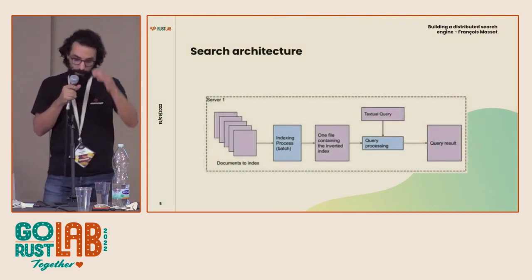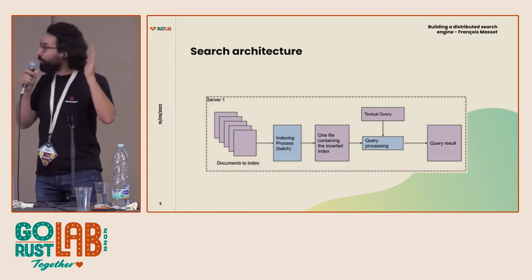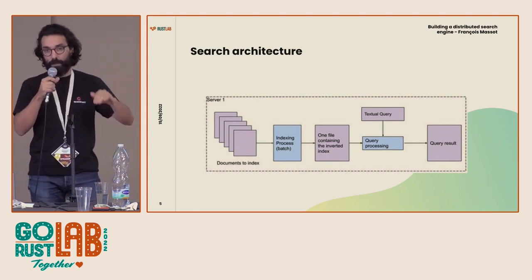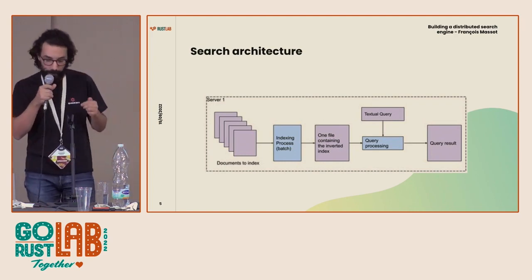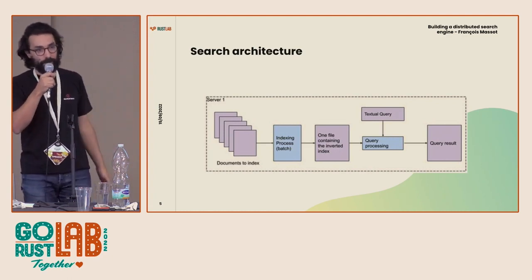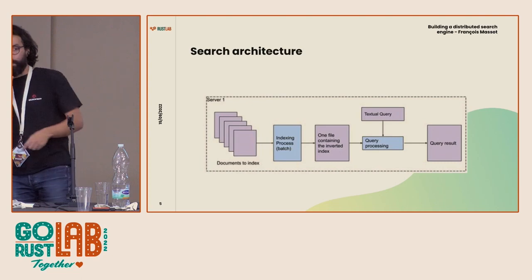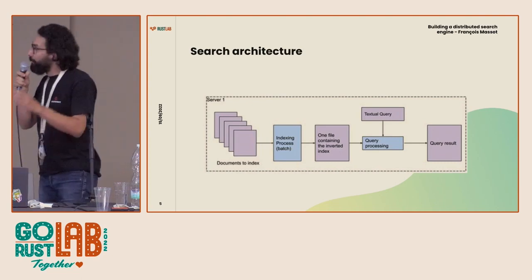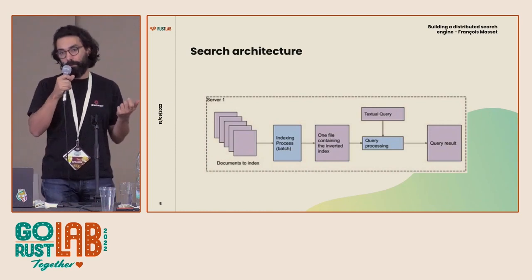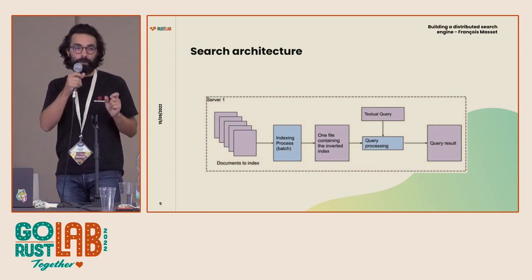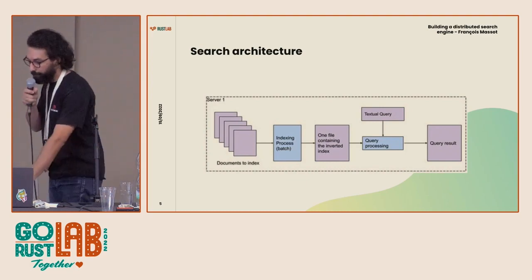Let's see what a search engine is — forget the distributed part for a moment, working only on one machine. Basically all search engines work like this: you have a bunch of documents as input, the engine processes them and creates a data structure on disk called the Inverted Index — a dictionary of terms pointing to the list of documents containing that term. On the read path, a user sends a query, the engine parses it, analyzes the words, queries the Inverted Index, and returns matching documents.